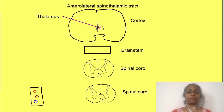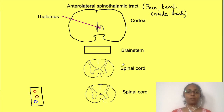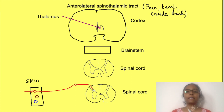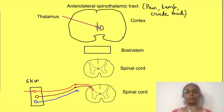The anterolateral spinothalamic tract carries pain, temperature, and crude touch sensations from the periphery to the CNS, except from the face. Here is shown a region of the skin with receptors. The first neuron is the sensory neuron with peripheral receptors on its end. These sensory neurons enter the spinal cord dorsally and synapse with another neuron in the grey matter of the spinal cord. We will draw three separate lines carrying these three different sensations from the region of the skin.